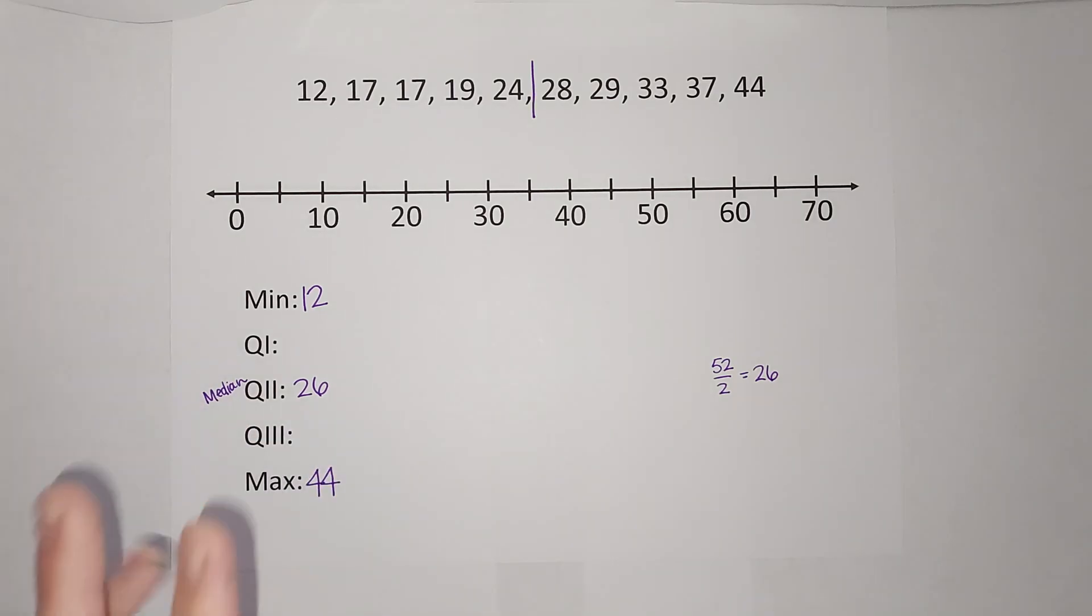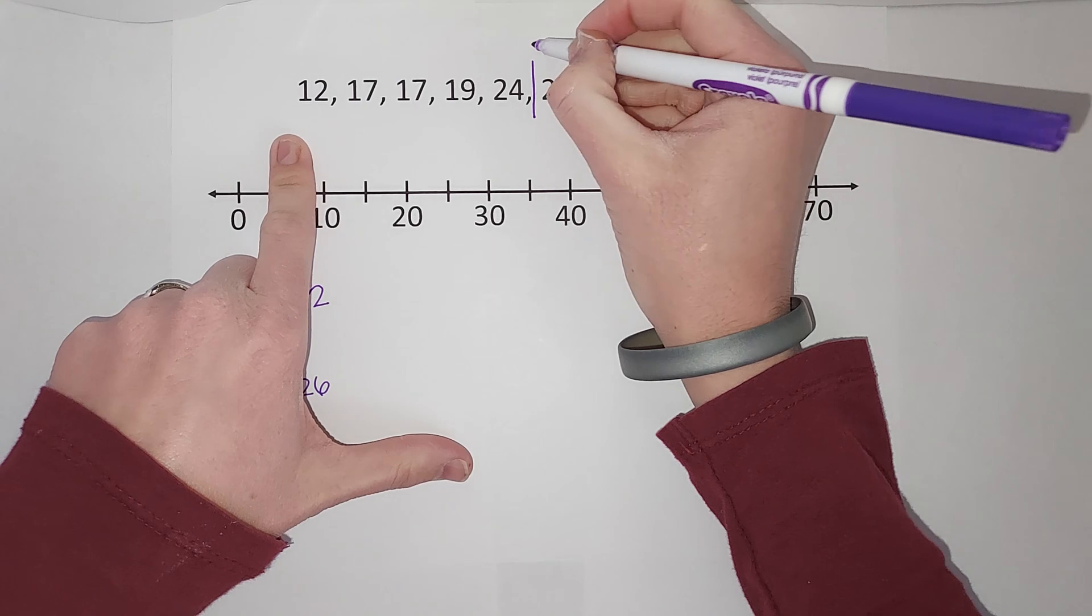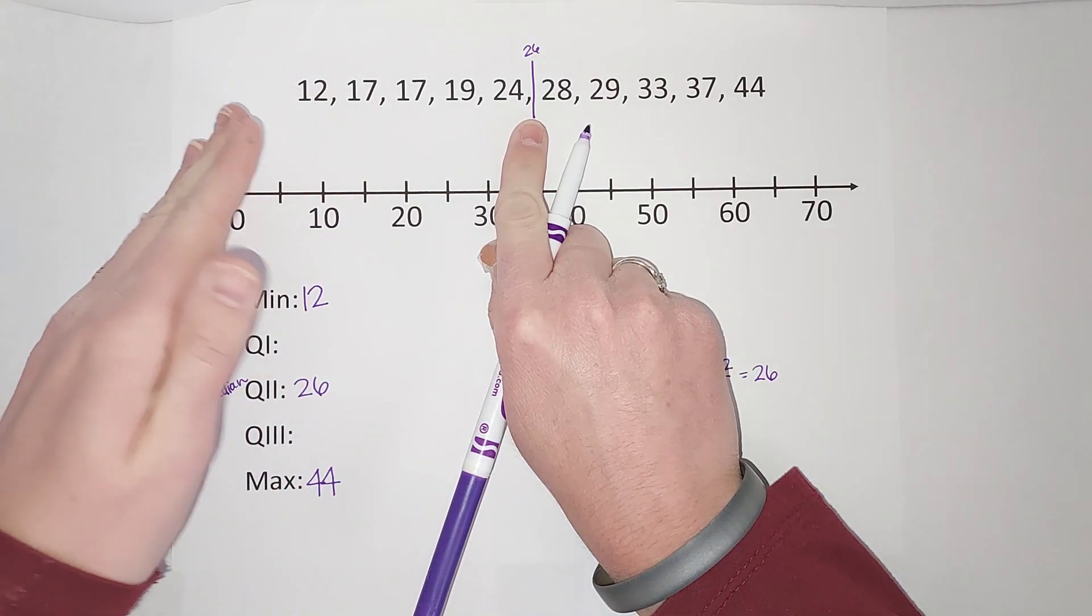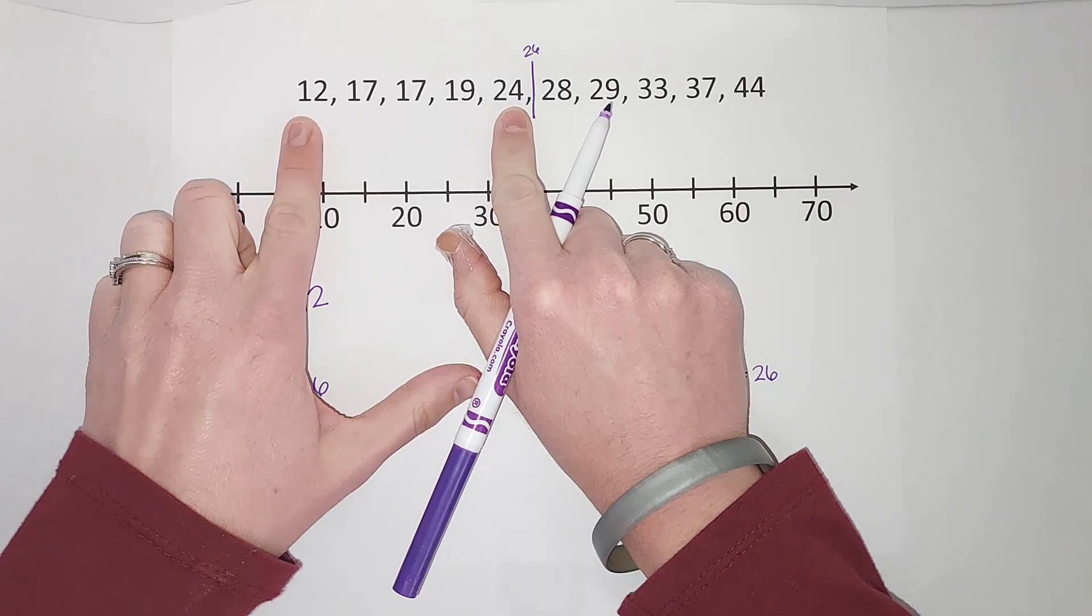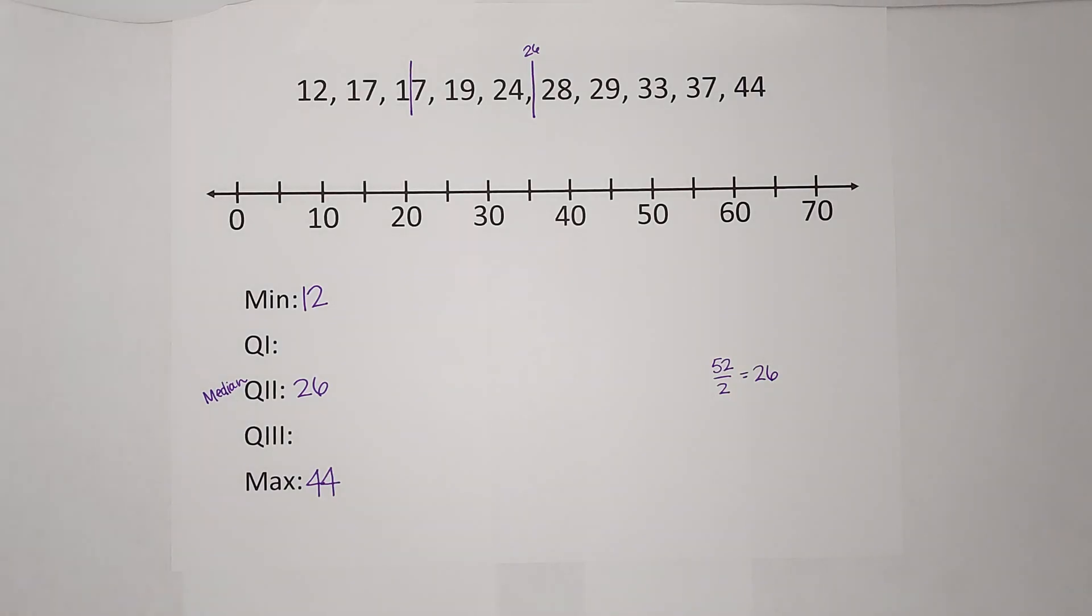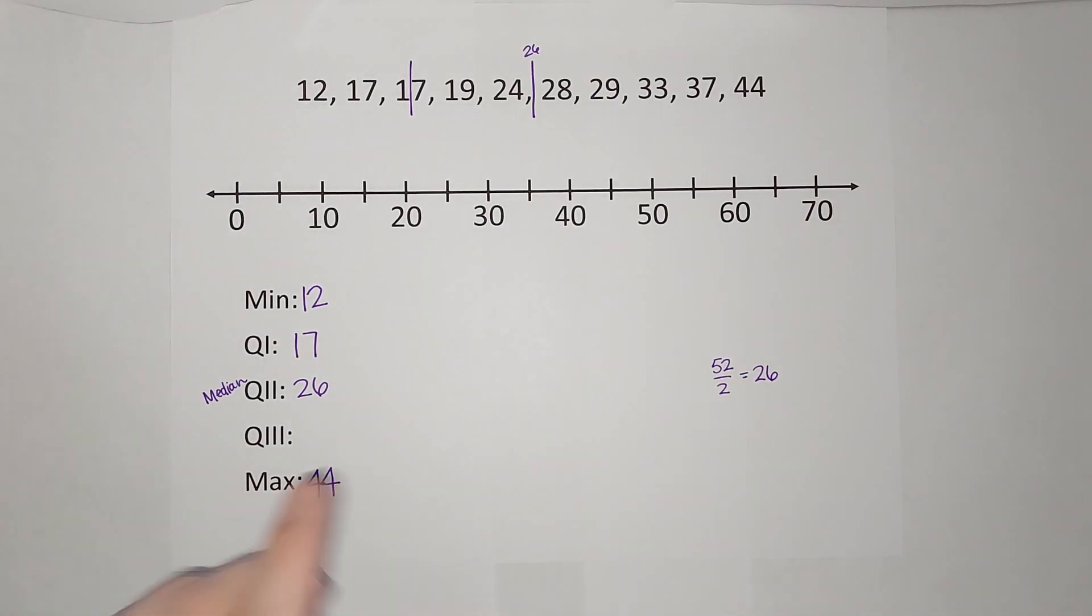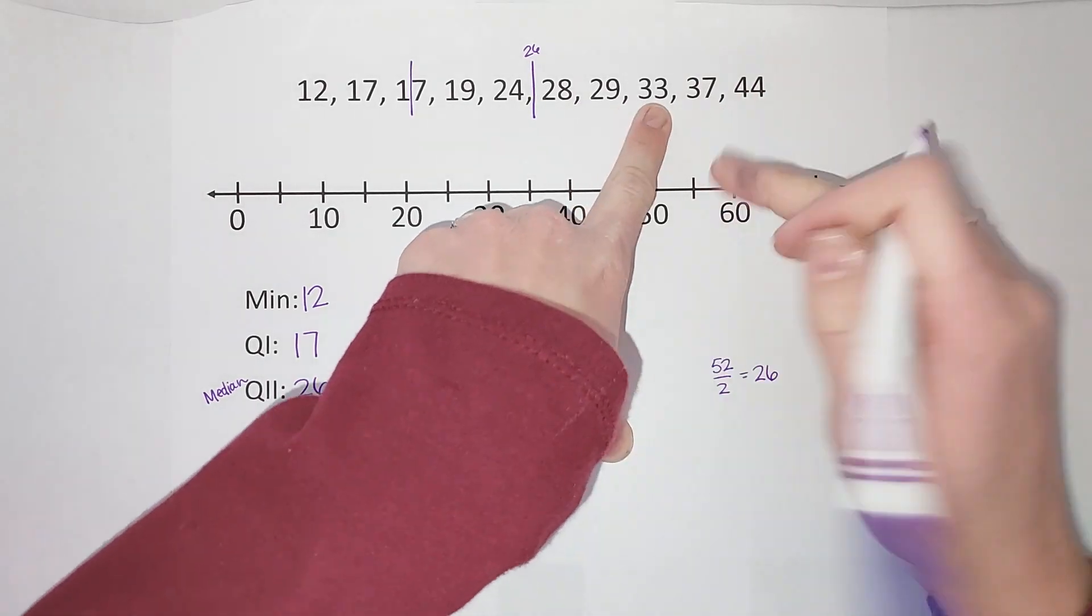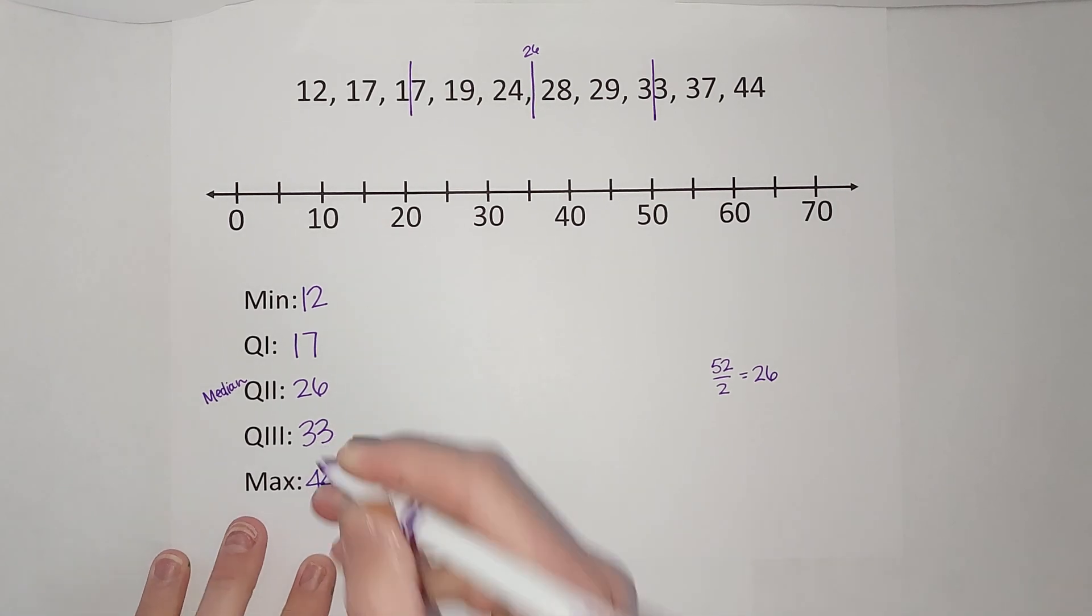Now for my first quartile. 26 was my second. We are going to count to the middle of this bottom set. We're not going to count the 26 as we count in but we are going to count the 24. We're going to count in and it is 17, and it's a single number, I don't have to take an average this time. So my first quartile is 17. My third quartile, you can probably guess, we are doing the top half, the middle of it. We're going to count in, I get 33.